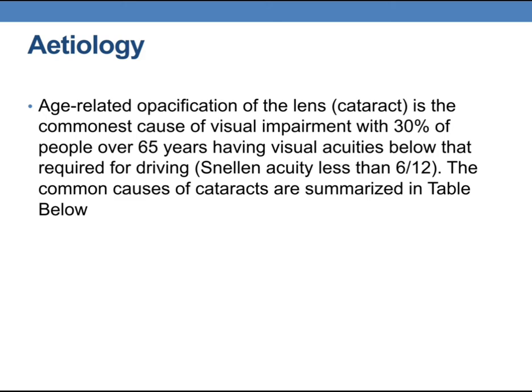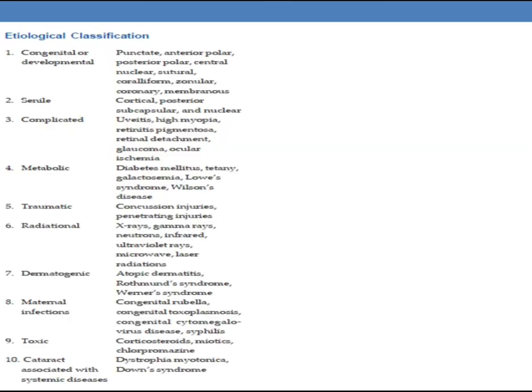The common causes of cataracts are summarized in the table below. The etiological classification divides cataracts into: congenital or developmental, senile, complicated (such as uveitis, high myopia, retinitis pigmentosa, retinal detachment, glaucoma, ocular ischemia), metabolic, traumatic, radiational, dermatogenic, maternal infections, toxic, and cataract associated with systemic diseases.